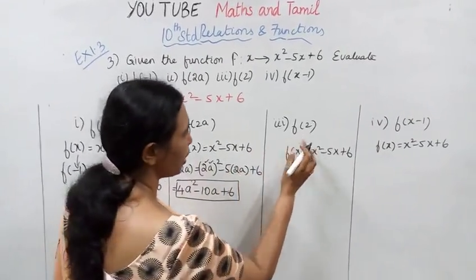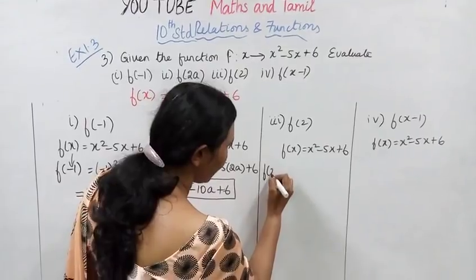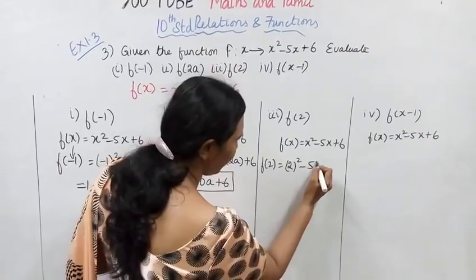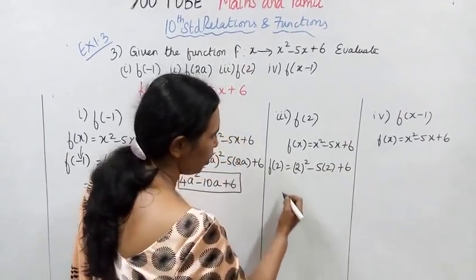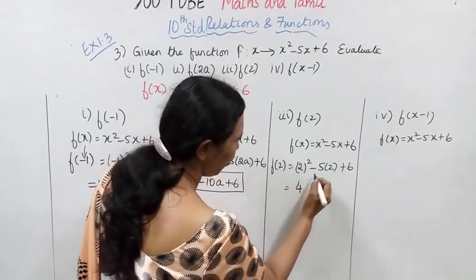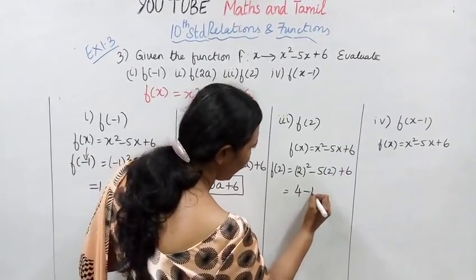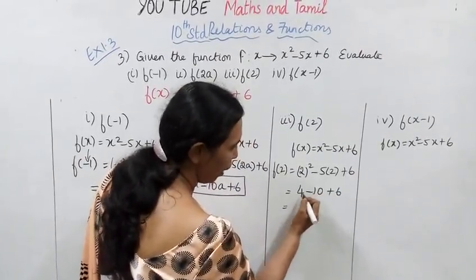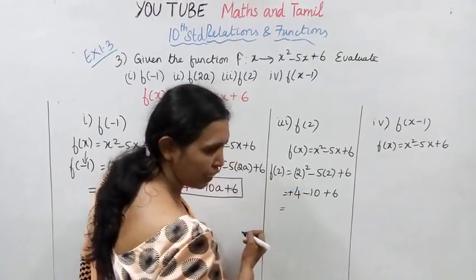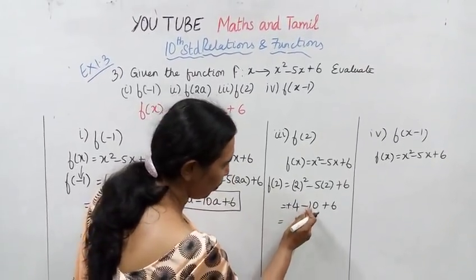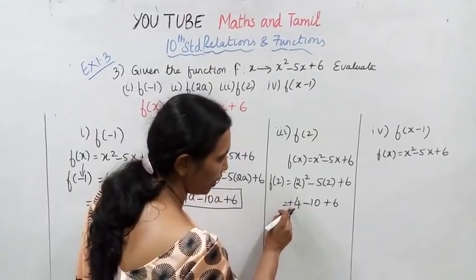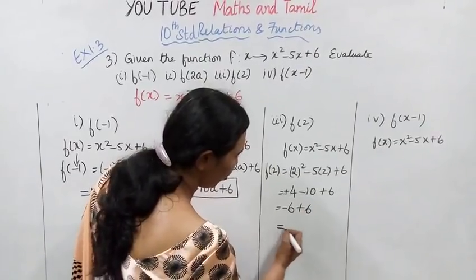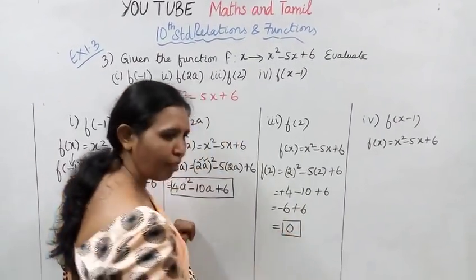For f of 2, substitute x equals 2: 2 square minus 5 into 2 plus 6. 2 squared is 4, minus 5 into 2 is minus 10, plus 6. So 4 minus 10 plus 6 equals zero. The answer for f of 2 is zero.